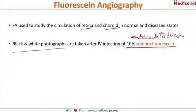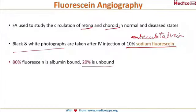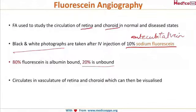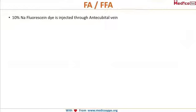80% of fluorescein is albumin bound and 20% is unbound. It circulates in the vasculature of the retina and choroid, which can then be visualized through a specialized camera. The dye has five phases in which it circulates in the retinal circulation — it is important to remember these phases.